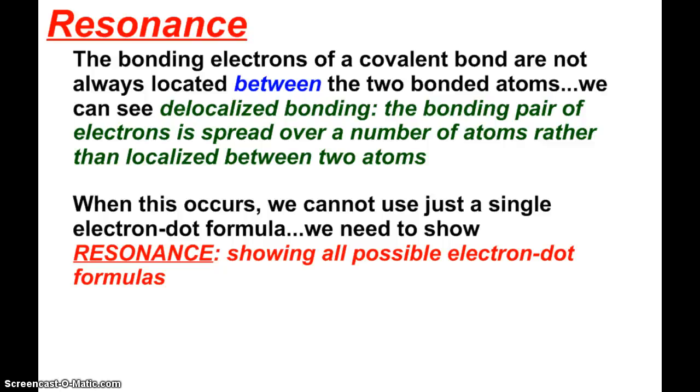Alright, I'll try to make this quick. As it says there, the bonding electrons of a covalent bond are not always located between the two bonded atoms. Even though we draw that little dashed line, it's not realistic where it always is. We can see what's called delocalized bonding, and the bonding pair of electrons can be spread over a number of atoms rather than just localized between two atoms.